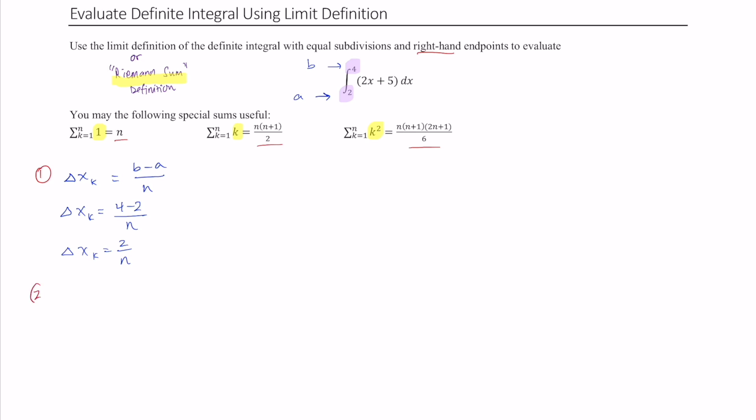Our second step would be to figure out what type of endpoints do we want to use, and we've already assigned that we want to use the right hand endpoints. So using the right hand endpoints means that the formula we'll be using will be the summation as k goes from 1 to n of f of a plus k times delta x times delta x. This is just something that you will remember and memorize for you to use that right hand rule.